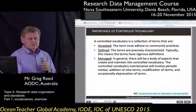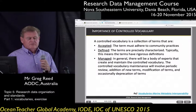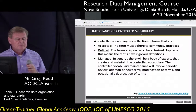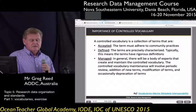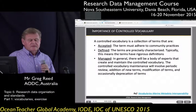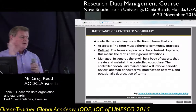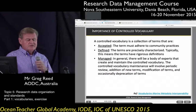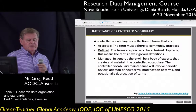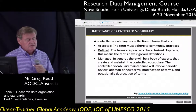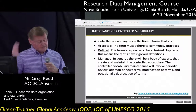What is the importance of controlled vocabularies? First, vocabularies need to be accepted — a community needs to accept and adhere to a particular vocabulary. They need to be defined in a precise way, with rigorous definitions agreed to by the community. They also need to be managed: a body of experts creates and maintains controlled vocabularies, involving periodic review, addition of new terms, modification of terms, and occasionally deprecation of obsolete terms.